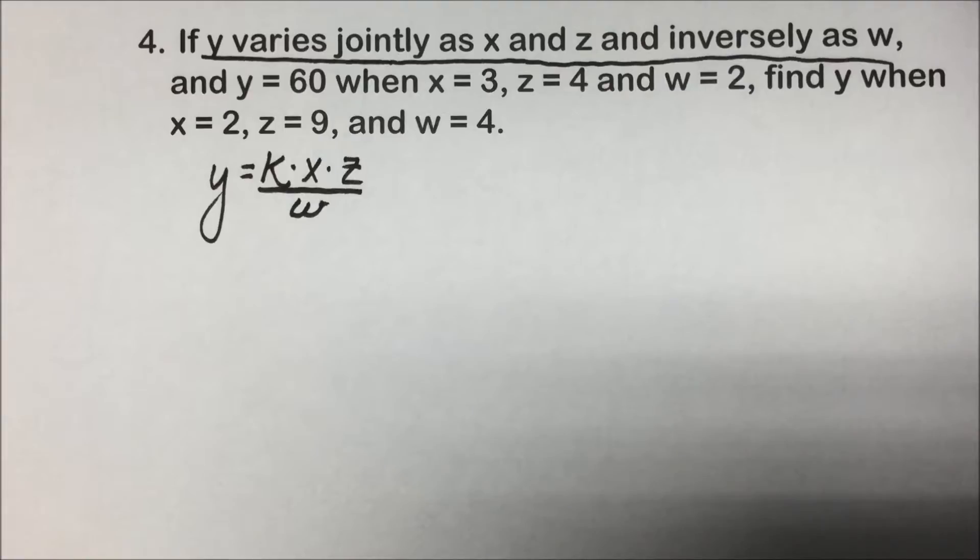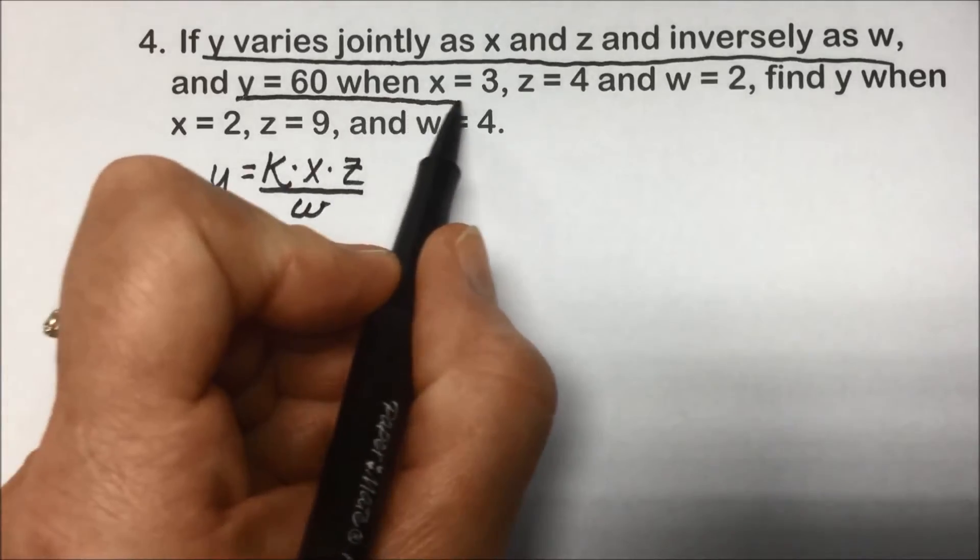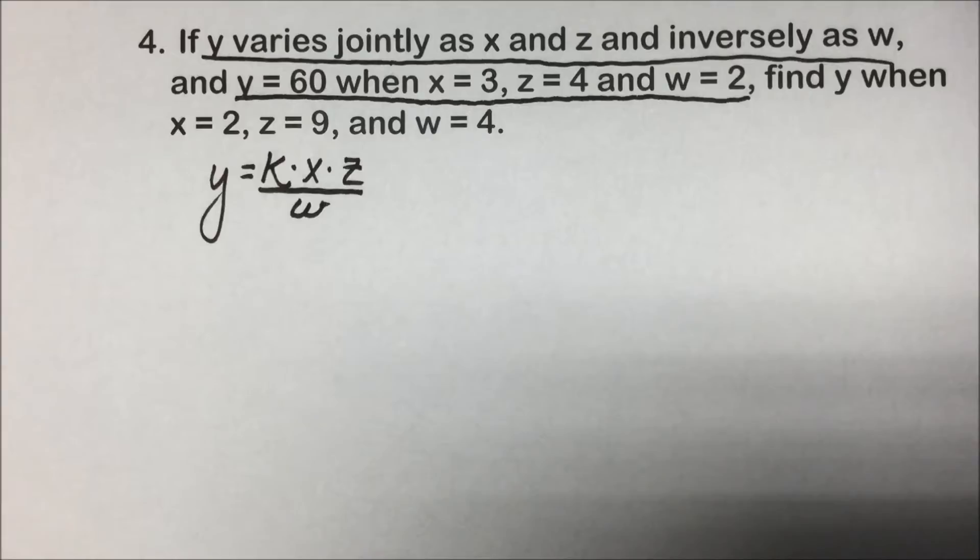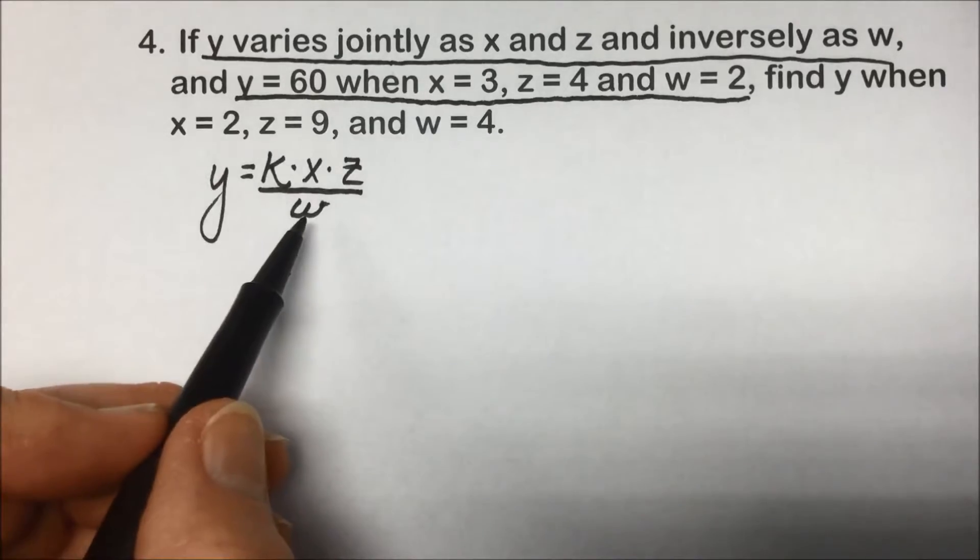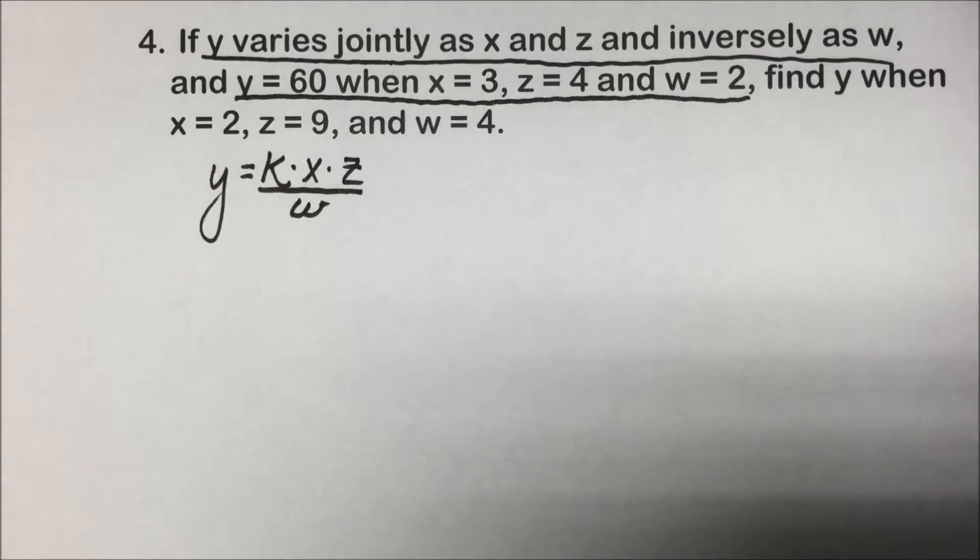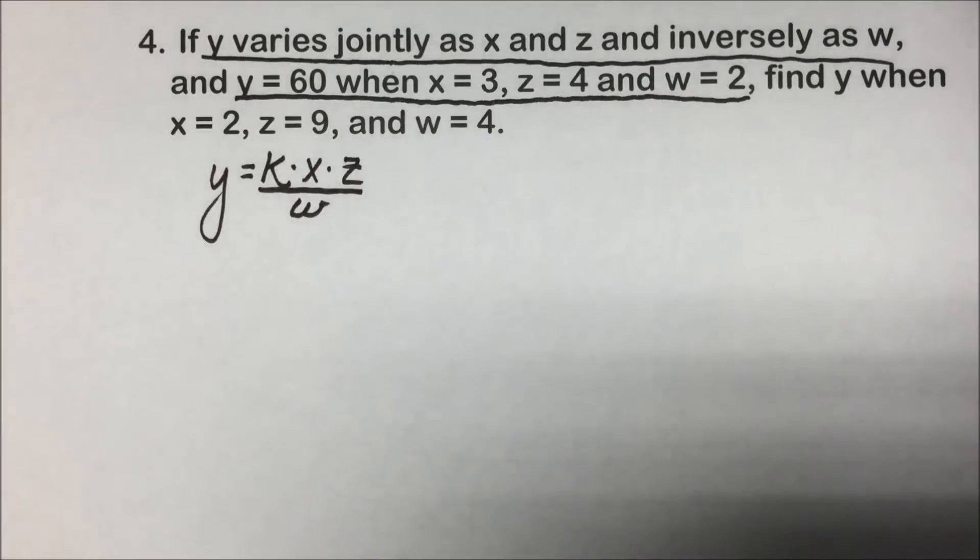Next, it gives us one set of values. They're telling us that Y is 60 when X is 3, Z is 4, W is 2. That's giving us four of the five variables. It will allow us to solve for K. Then they're asking us to find Y when we have the other three variables.